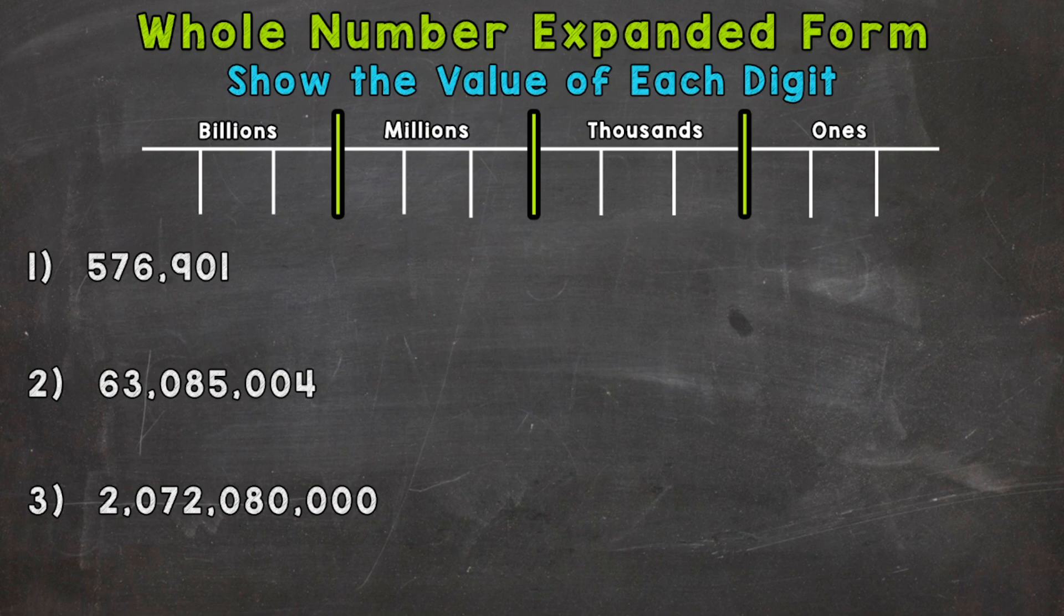Now when it comes to expanded form, we take numbers and expand them out to show the value of each digit. Expanded form really helps our overall number sense and understanding of numbers. So we have three examples that we're going to go through together in order to get this down.